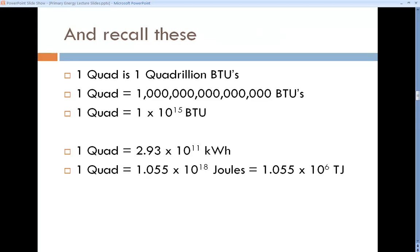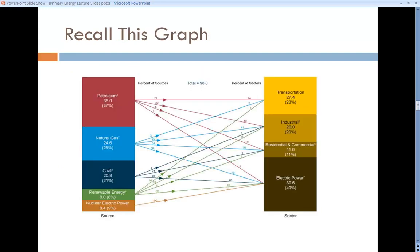A quad is a quadrillion BTU, which is 10 to the 15th BTUs. It's also just shy of 3 times 10 to the 11th kilowatt-hours. That's a pretty big unit. A quad is also 1 times 10 to the 6th terajoules, or 1 times 10 to the 18th joules. This focuses on how small the joule unit is for us. That's kind of the background.